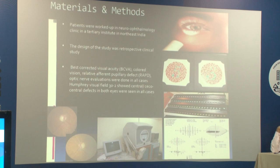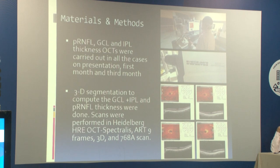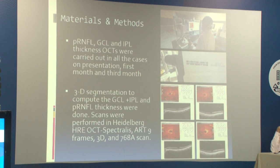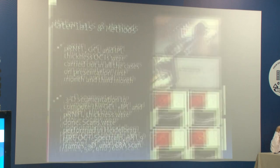Humphrey visual field 30-2 was done to document the defects. Peripapillary retinal nerve fiber layer, GCL and IPL thickness in OCT were carried out in all cases at presentation, first month, and third month. 3D segmentation was used to compute the GCL plus IPL and RNFL thickness. Scans were performed on Heidelberg OCT Spectralis with ART 9 frames, 3D and 768A scans.